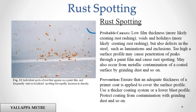Rust Spotting. Probable causes: low film thickness, voids and holidays, but also defects in the steel such as laminations and inclusions. Too high a surface profile may cause penetration of peaks through a paint film and cause rust spotting. May also occur from metallic contamination of a coated surface by grinding dust and so on. Prevention: ensure that an adequate thickness of a primer coat is applied to cover the surface profile. Use a thicker coating system or a lower blast profile. Protect coating from contamination with grinding dust and so on.